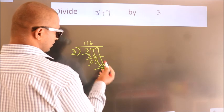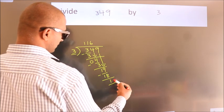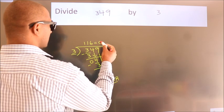After this, no more numbers to bring it down. So we stop here. This is our remainder. This is our quotient.